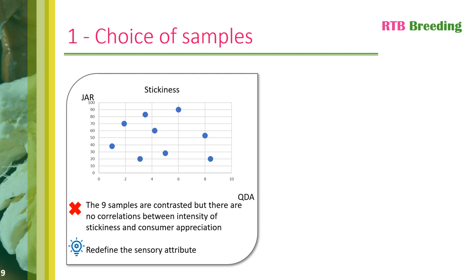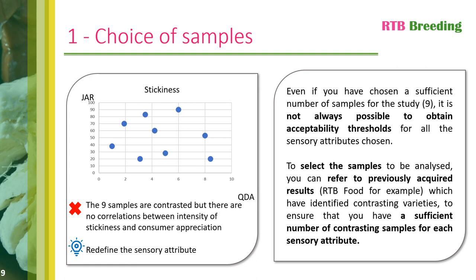In this case, it may be important to redefine the attributes clearly, to ensure that they are well understood by both interviewers and consumers. Despite a clear definition and a good number of contrasting samples, it's still possible to obtain this type of result. This can sometimes be due to the correlation of one descriptor with another — in other words, consumer preference is not guided by this descriptor. In the different examples shown, we have seen that even with a sufficient number of samples, sometimes they do not allow you to define acceptability thresholds for all sensory attributes chosen. Solutions include adding extra samples or modifying them.